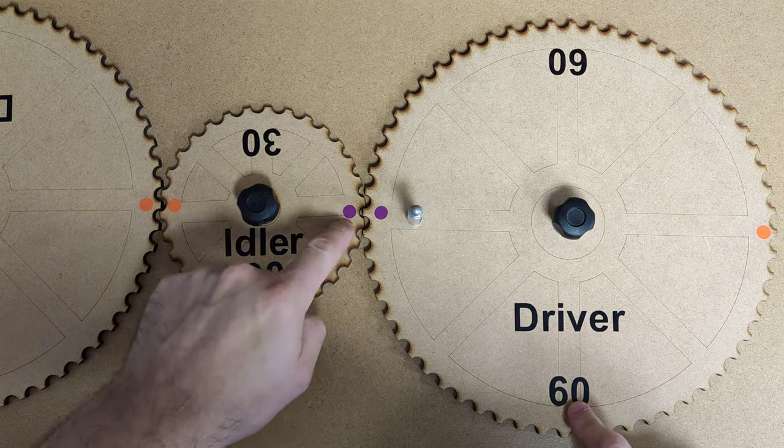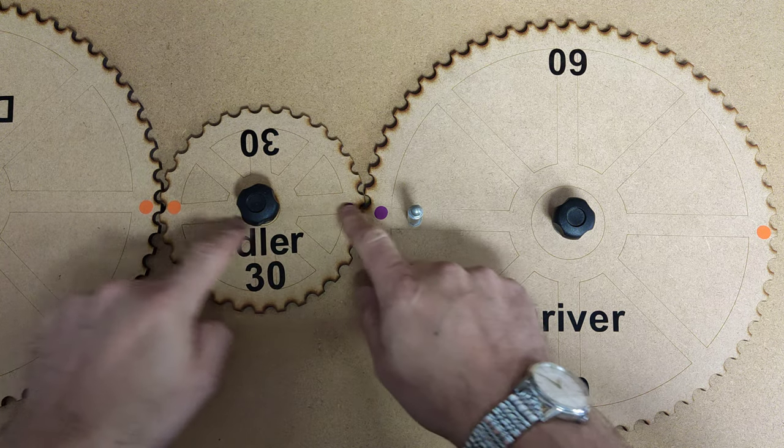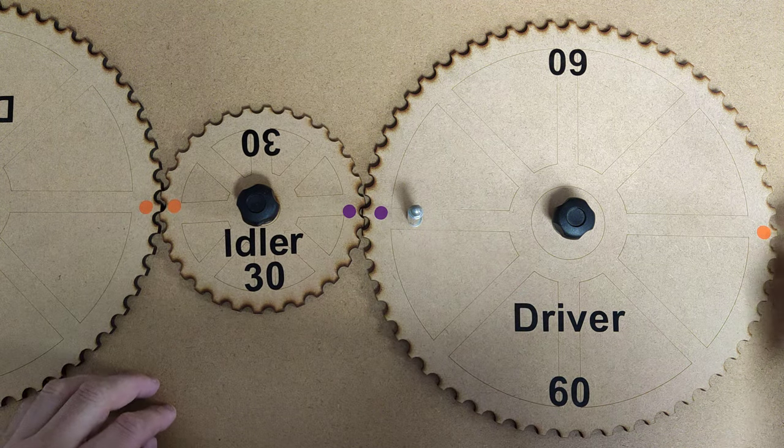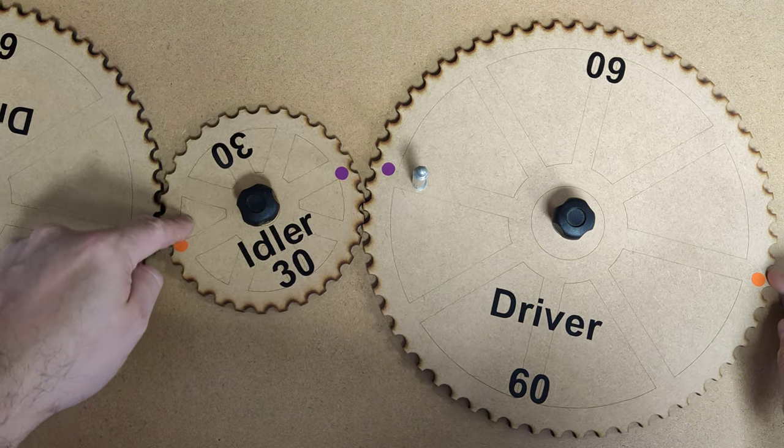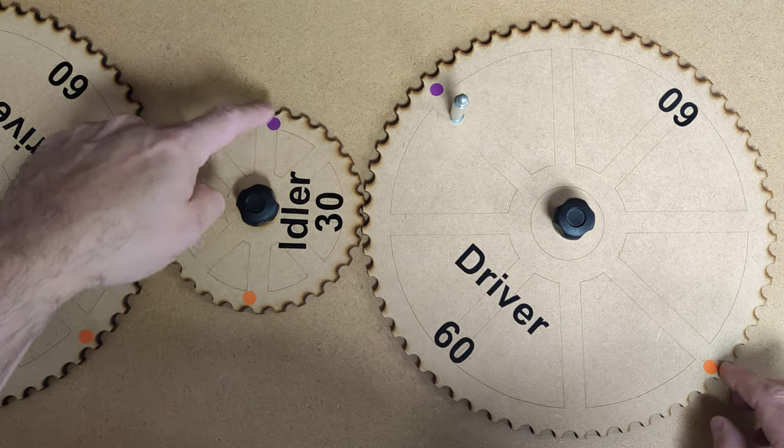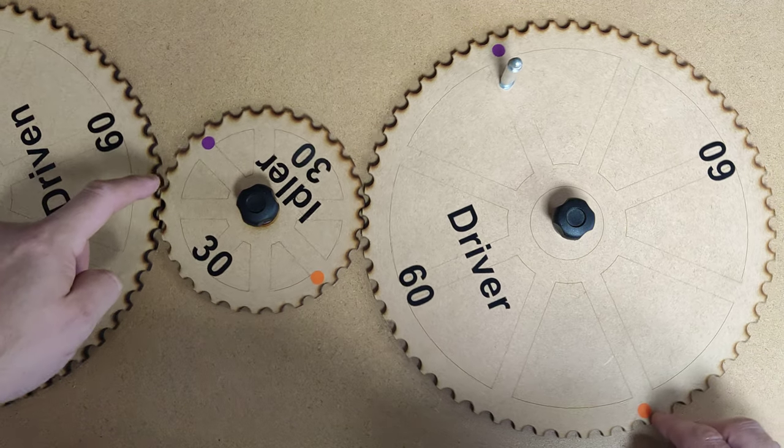We've got some little dots marked on which show the halfway line. Watch what happens. If I follow the purple dot around as I turn the big cog, the purple dot's gone round, it's coming around, coming around, it's gone all the way around.